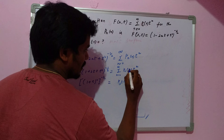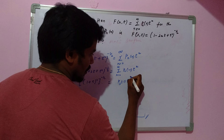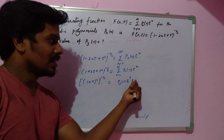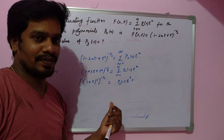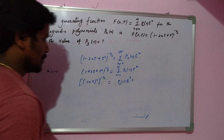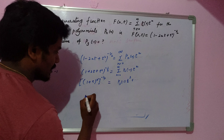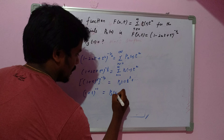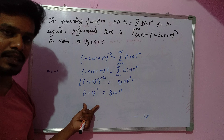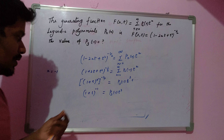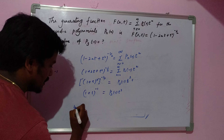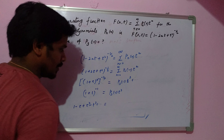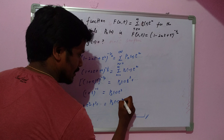Since we need P₃(-1), we only need to keep the n=3 term, which contributes P₃(-1) times t³. The squares cancel, giving us (1 plus t) to the power minus one. This is a binomial expression of the form (1 plus x) to the power m. Expanding it gives: 1 minus t plus t² minus t³ and so on, which equals P₃(-1) times t³ plus other terms.